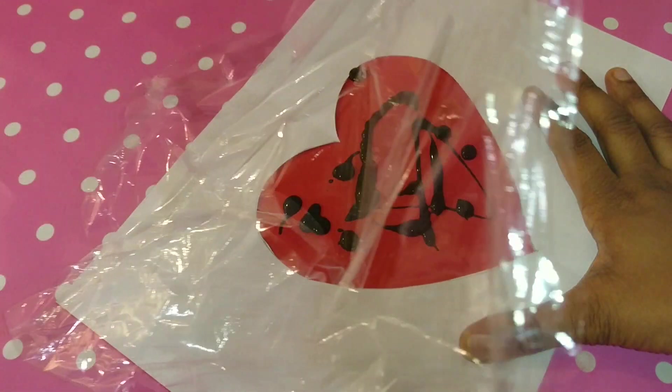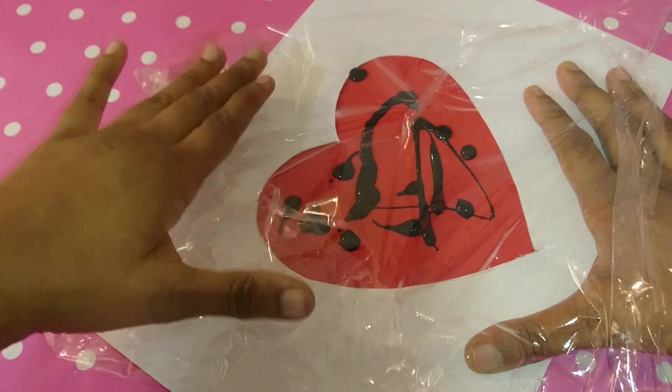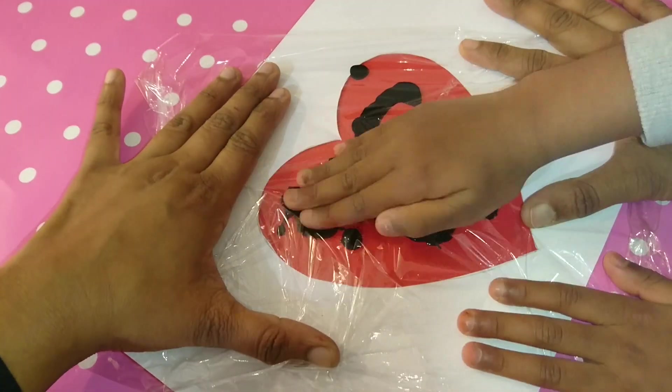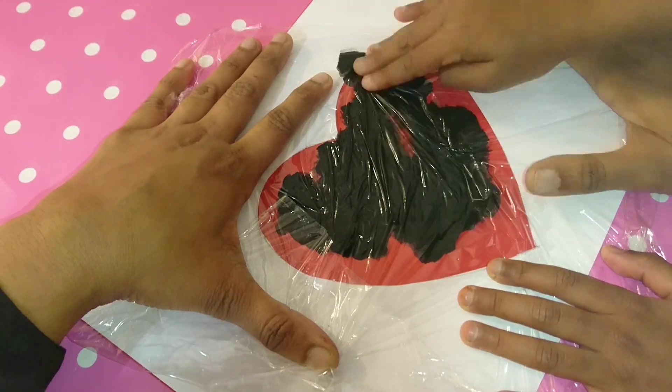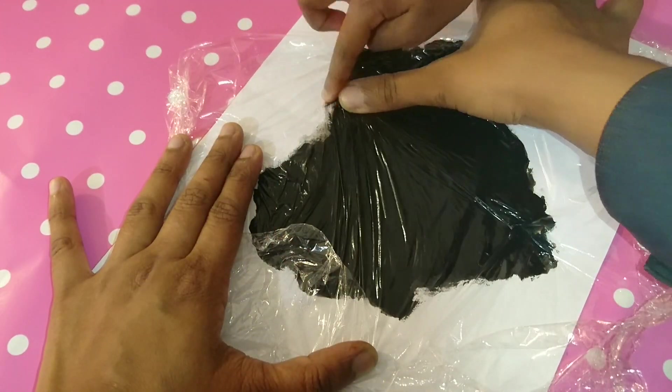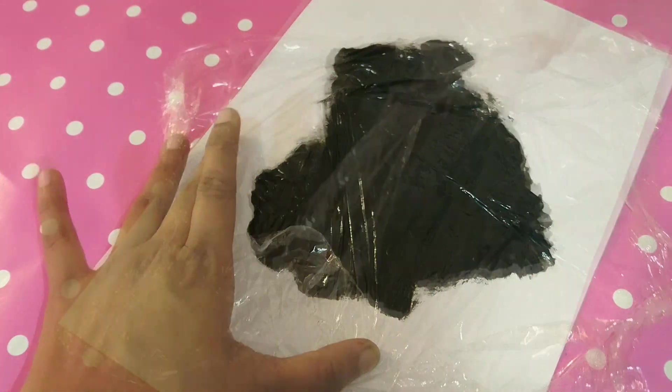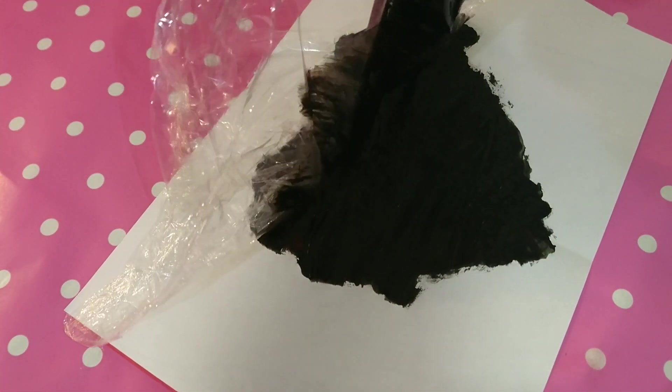Once enough paint was added, we placed a piece of cling wrap over it and gently started to press with our fingers. We can always add more paint if it is needed. Once it is spread very well, it is time to remove the cling wrap.